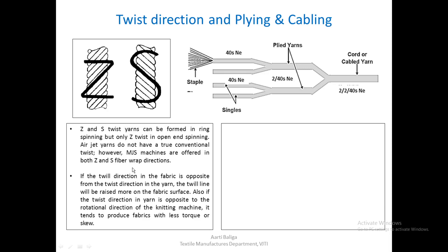Twist direction is very important in downstream fabric manufacturing. If the twill direction in the fabric is opposite to the twist direction in the yarn, the twill line will be raised more on the fabric surface. Also, if the twist direction in the yarn is opposite to the rotational direction of the knitting machine, it tends to produce fabrics with less torque or skew. During spinning, care must be taken to know what kind of yarn is expected in the downstream processes.